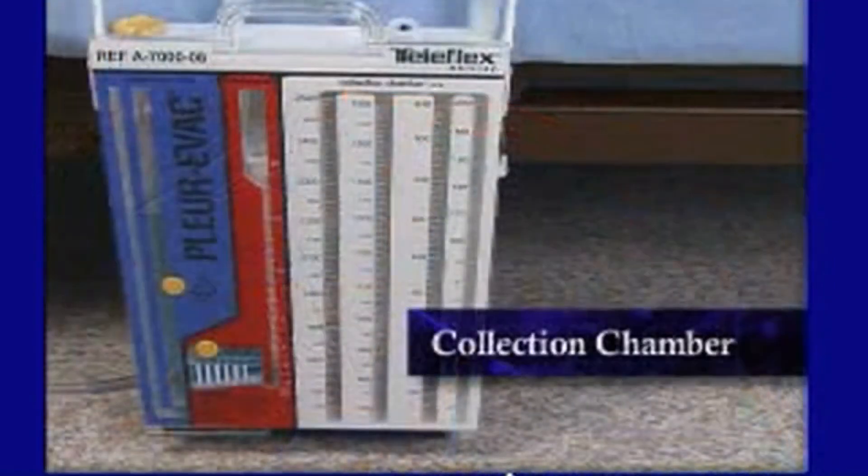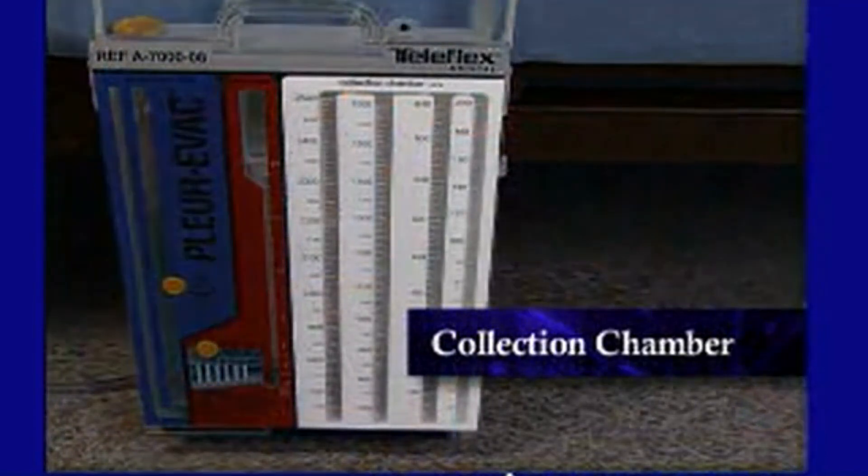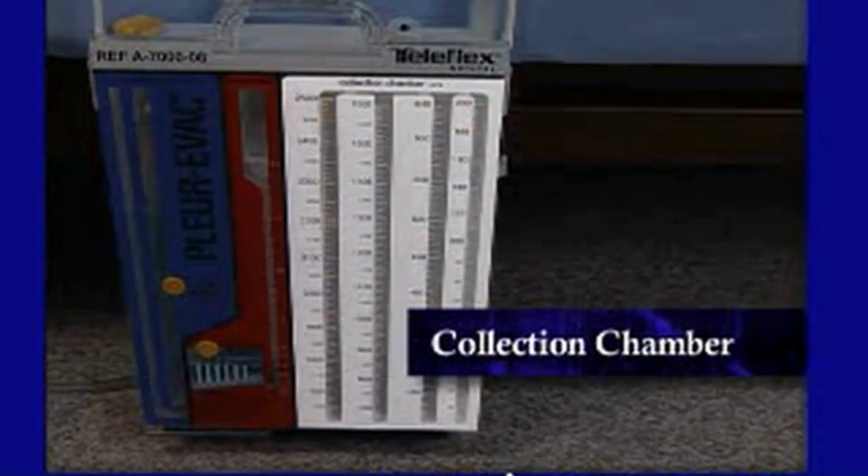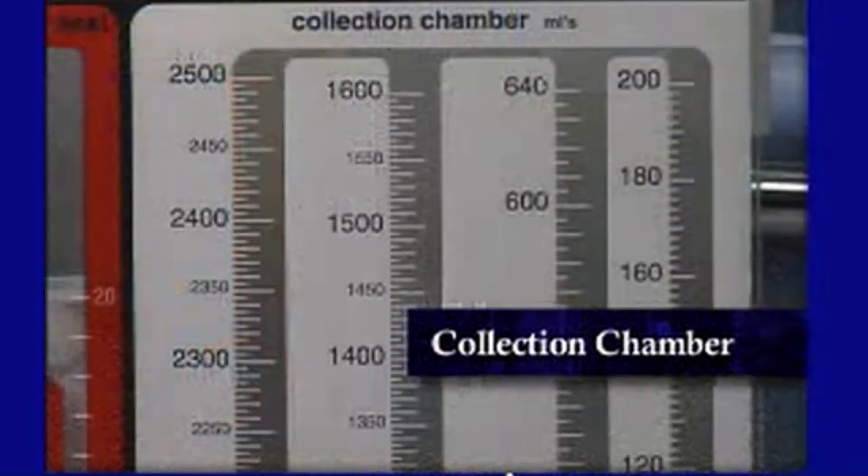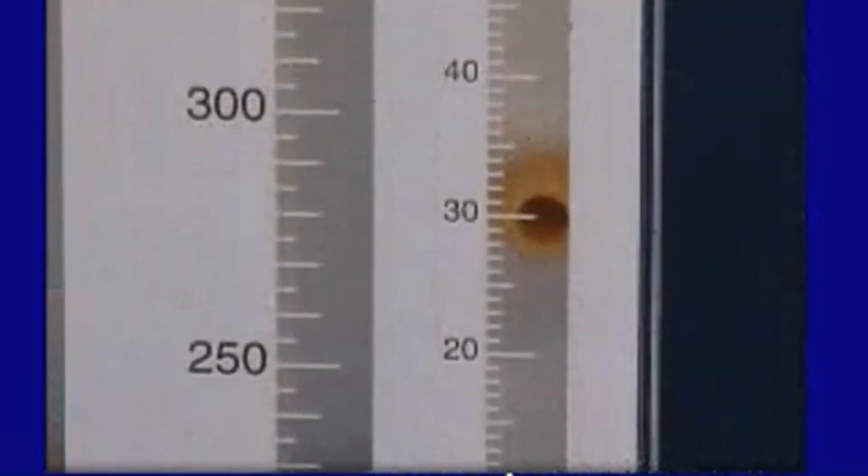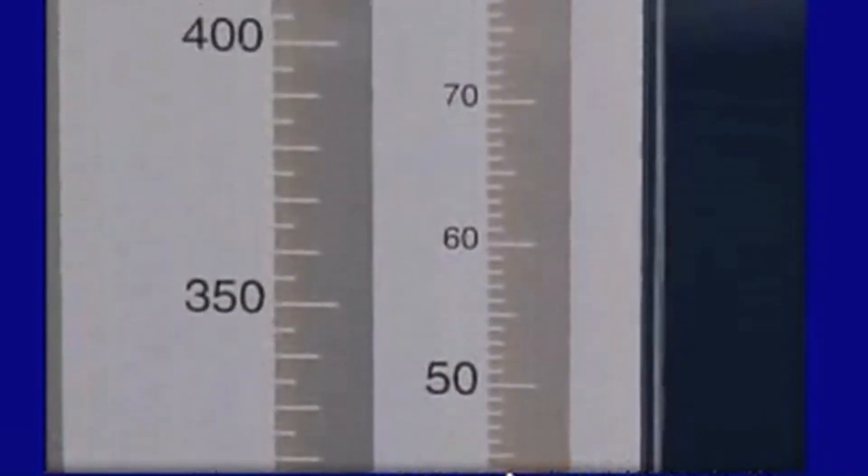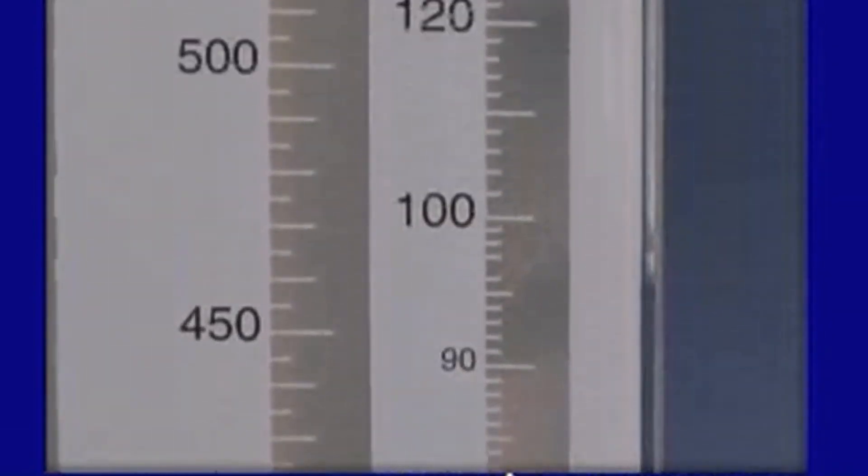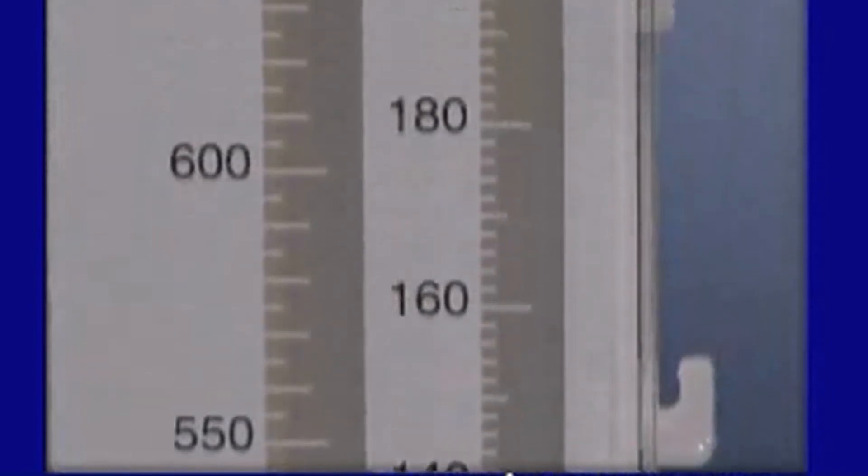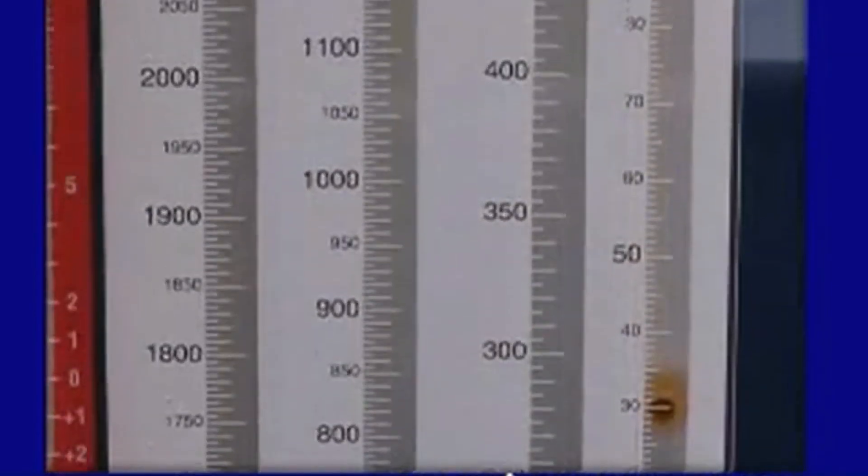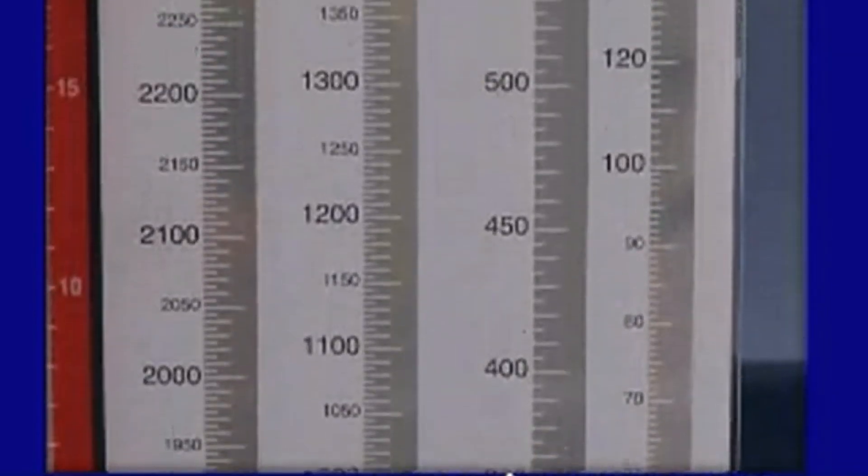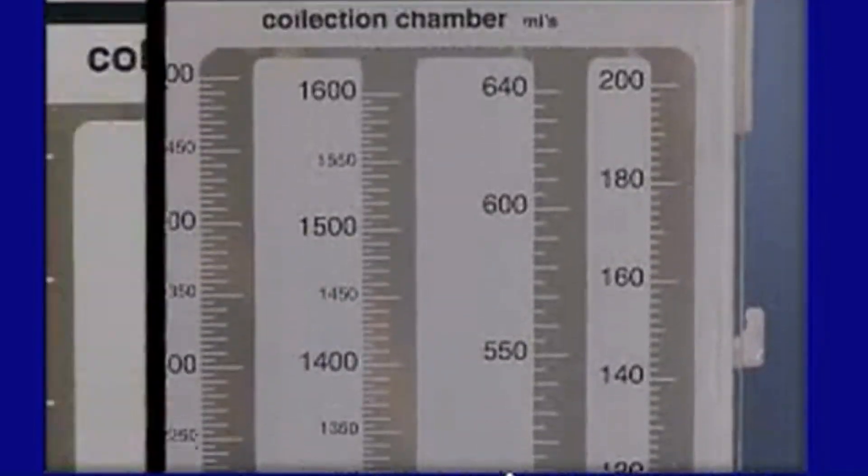The collection chamber on the adult pediatric Plurivac A7000 unit consists of four interconnected columns with a total capacity of approximately 2500 cc's. The first column measures in fine increments of 1 cc from 0 to 100 cc's. From 100 cc's to 200 cc's, increments are 2 cc's, and then 5 cc's for the remainder of the collection chamber.